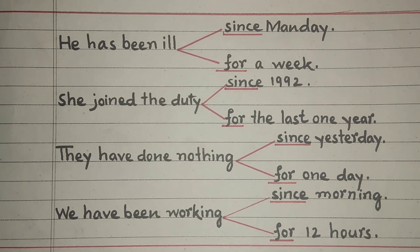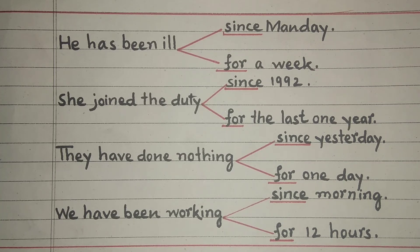They have done nothing for two days. Dear students, if you want to say they have eaten nothing for one day — for one day, for two days — you use 'for' with a period of time.